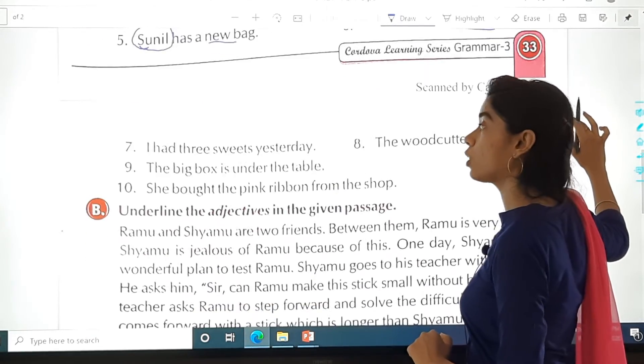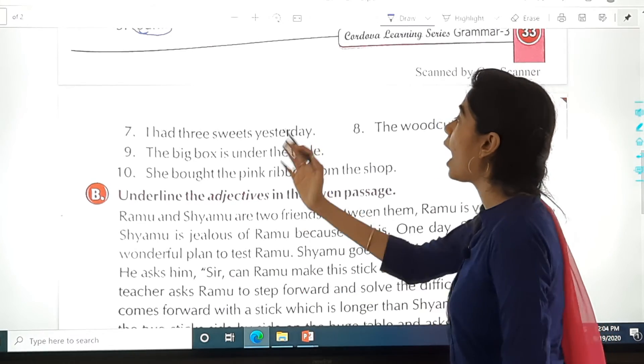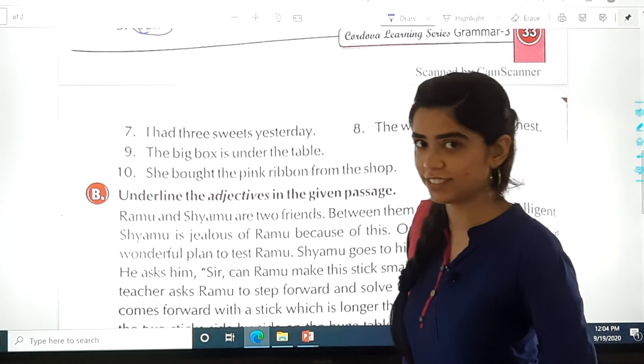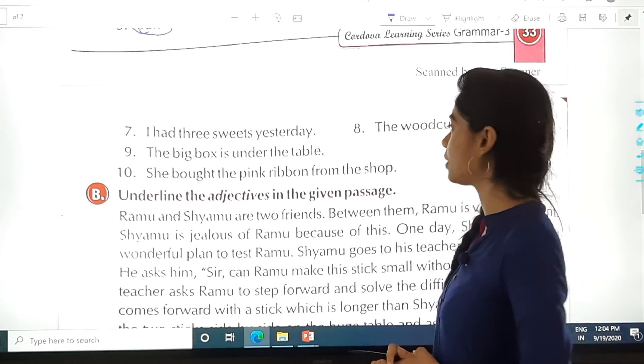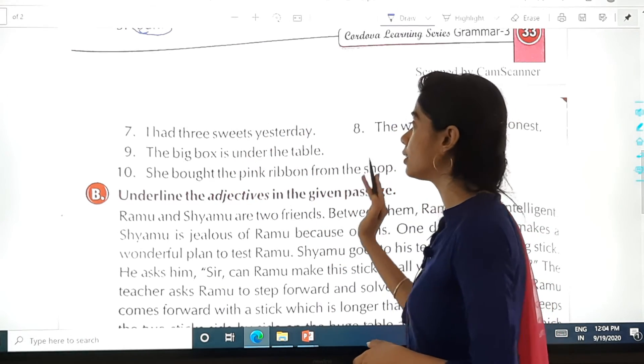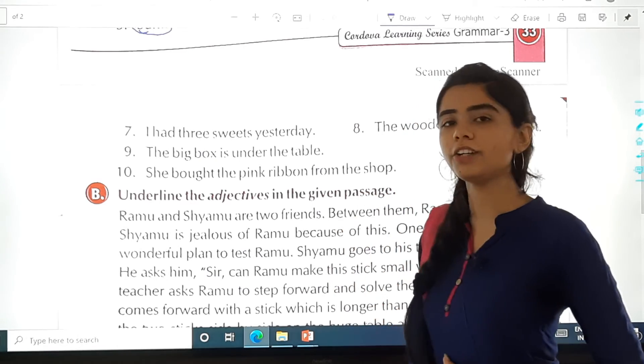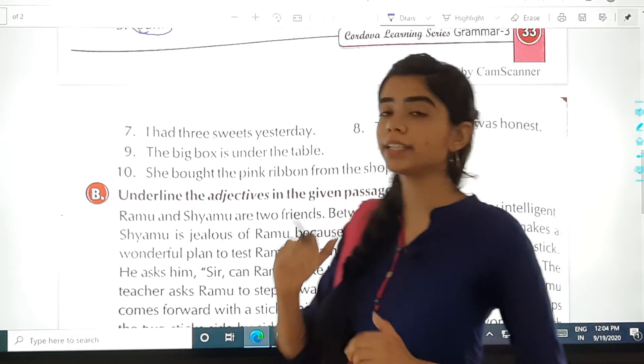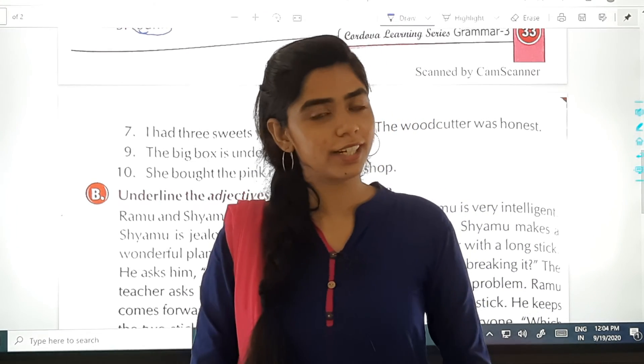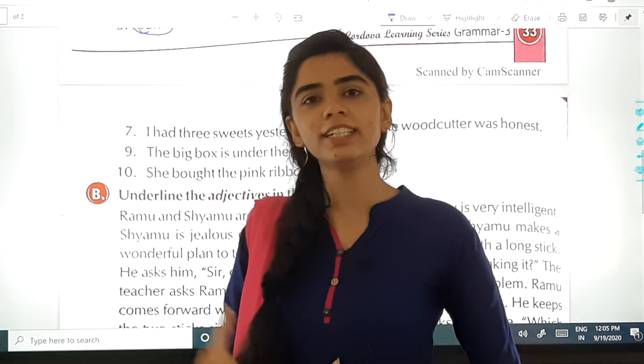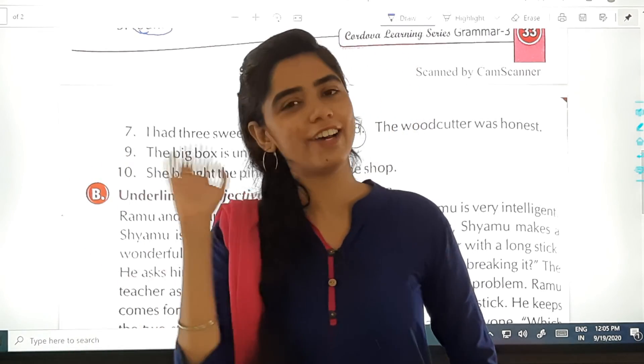I want you all to try it on your own. I will read it once for you. I had three sweets yesterday. The woodcutter was honest. The big box is under the table. She bought the pink ribbon from the shop. So try these four sentences on your own. I hope the topic is clear to all of you. We will stop over here and continue in the next class. Till that, God bless you all. Have a nice day.